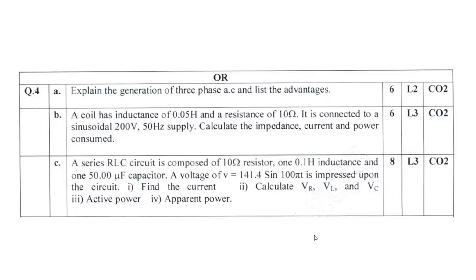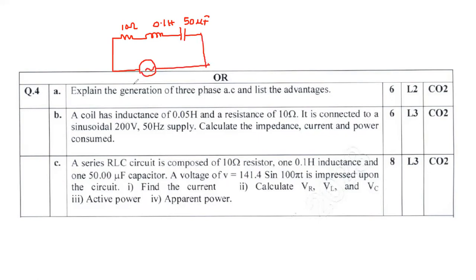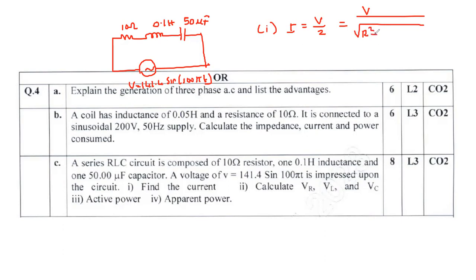The third part is an RLC circuit with R = 10 ohm, L = 0.1 henry, C = 50 microfarad, and voltage V = 141.4 sin(100πt). Find the current using I = V/Z = V / √(R² + (XL − XC)²). XL = Lω and since omega = 100 radian per second directly from the voltage expression, XL = L × 100.